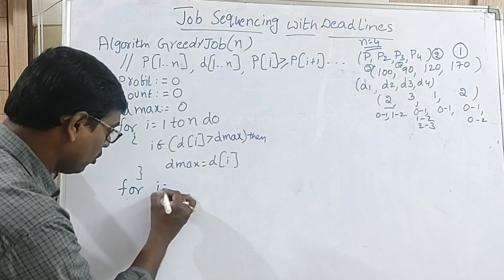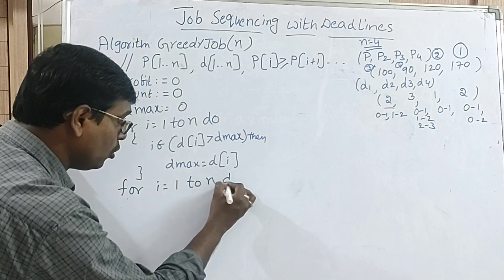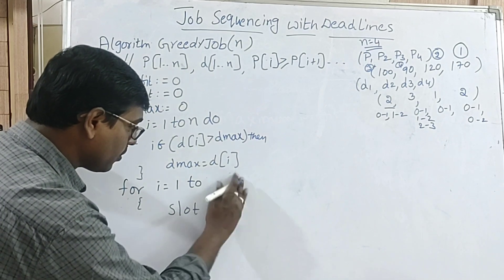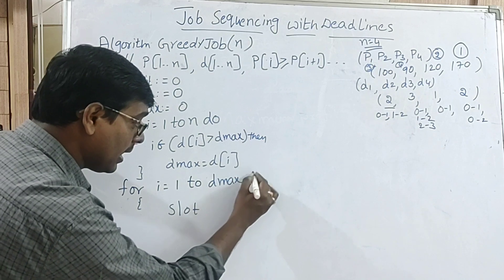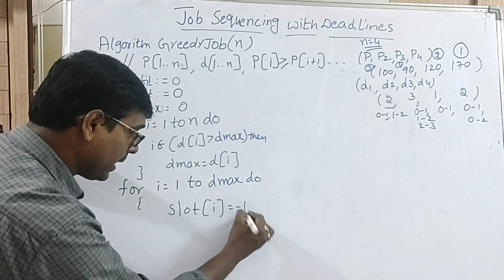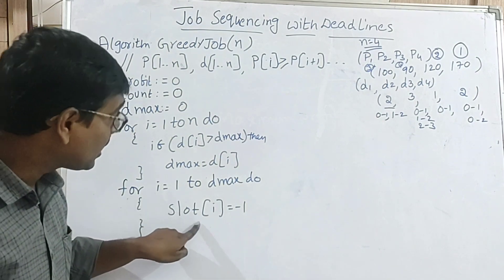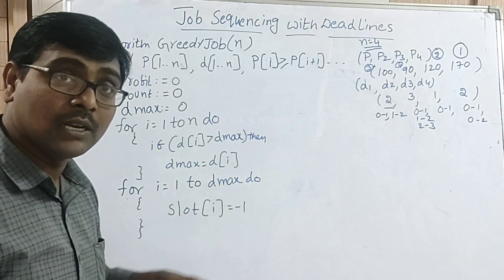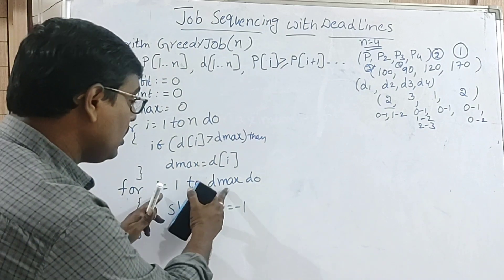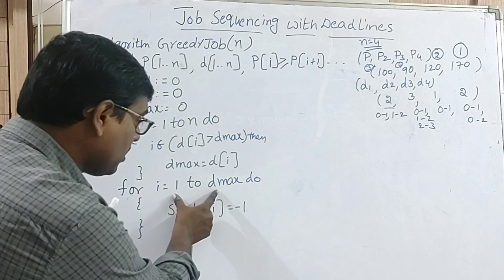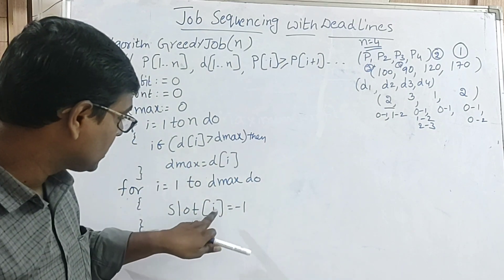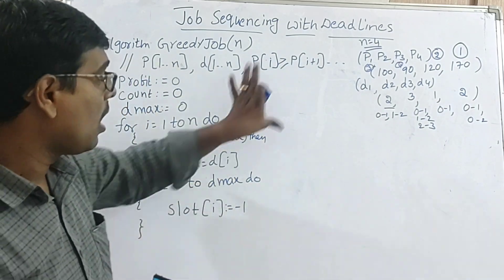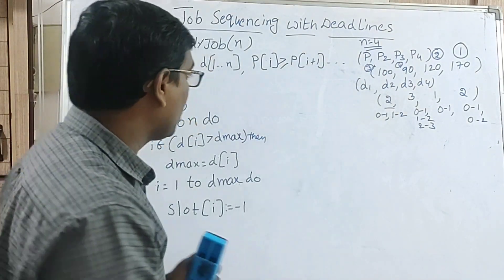I am repeating one more loop: for i equal to 1 to dmax, use another array called slot. Slot has dmax entries — that is, a maximum of three slots. Initially, slot[i] is set to minus one, meaning all slots are empty. Slot 1 is empty, slot 2 is empty, slot 3 is empty.